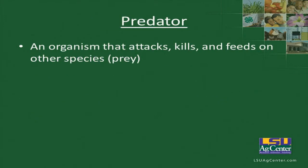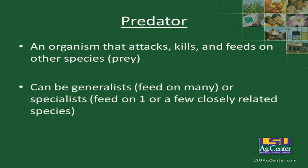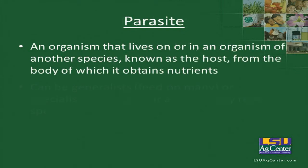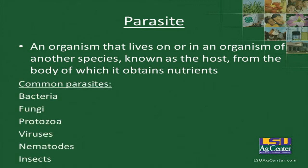A predator is an organism that attacks, kills, and feeds on other species. Predators can be generalists — feeding on many — or specialists that feed on one or few closely related species. A parasite is an organism that lives on or in a host organism of another species, from which it obtains nutrients. Common parasites include bacteria, fungi, protozoa, viruses, nematodes, and insects.